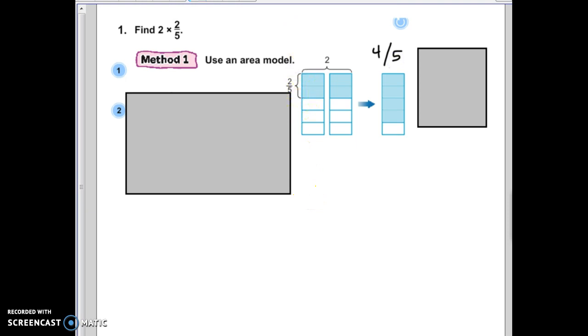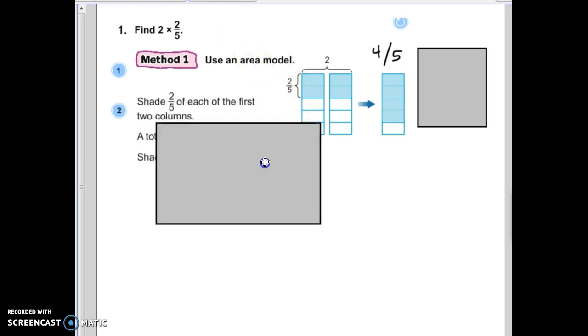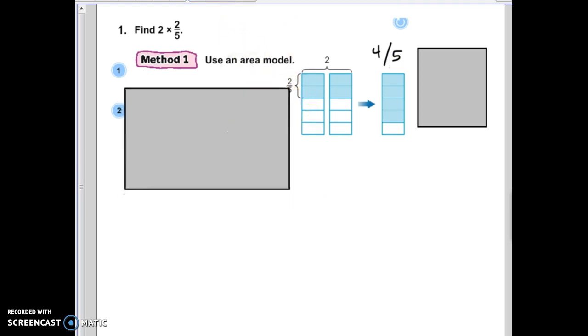Now, I'm going to show you the actual math behind the modeling. So, the way you would do this is take your 2, just rewrite the problem. 2 times 2 fifths. Underneath your whole number, please place a number 1. We know that all whole numbers can be expressed as a fraction over 1.